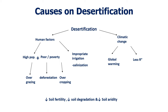Another important cause is inappropriate irrigation. About 70 to 80 percent of fresh water is used in irrigation, drawn from either surface water or groundwater. Depending on location, this water may have high salt content which slowly accumulates on the soil surface, creating wasteland or dry land where no crops can be grown. These factors reduce soil fertility and increase soil degradation and aridity.